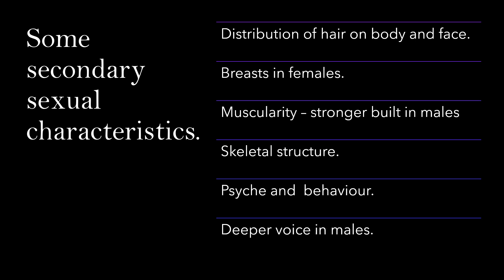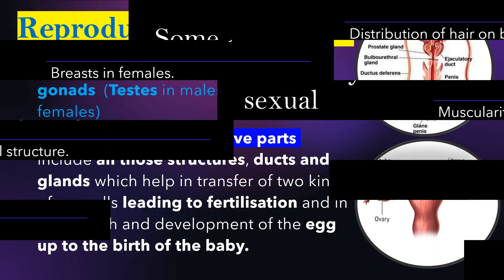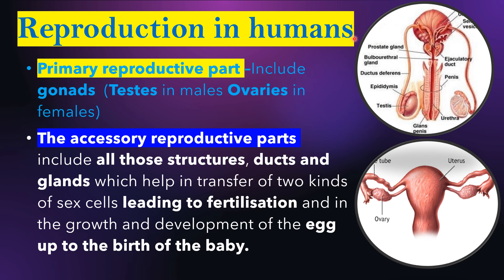Some secondary sexual characteristics, such as distribution of hair on the body and face, can be seen in males. Now let us learn about reproduction in humans. There are two types of reproductive systems in humans: male reproductive system and female reproductive system. Each consists of two types of reproductive parts: primary reproductive parts and accessory reproductive parts.